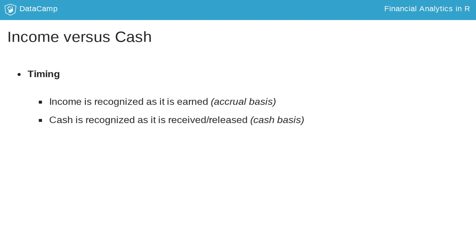The discrepancy between income and cash comes down to a few key issues. The first is timing. As we discussed, income is recognized on the accrual basis as it is earned. In contrast, cash is recognized as it is received. These two things can differ when we think about buying on credit or entering into long-term contracts. When cash is actually received is important because only then can we use it for other purposes.